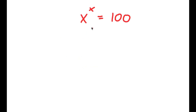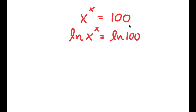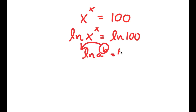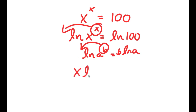In this problem, I have x to the power of x equals 100. I'll start by taking the natural log on both sides, giving ln of x to the power of x equals ln 100. Using the log power rule, I can move x to the front: x times ln x equals ln 100.